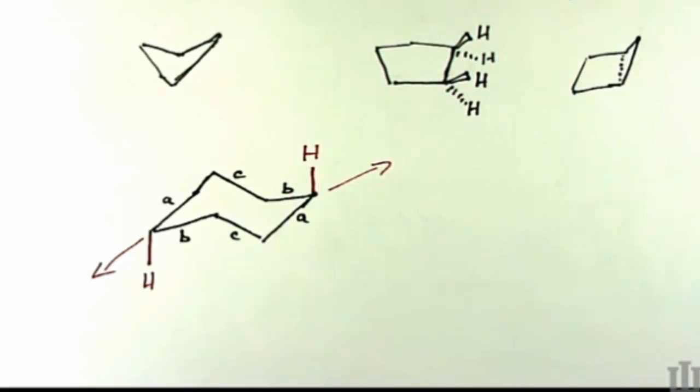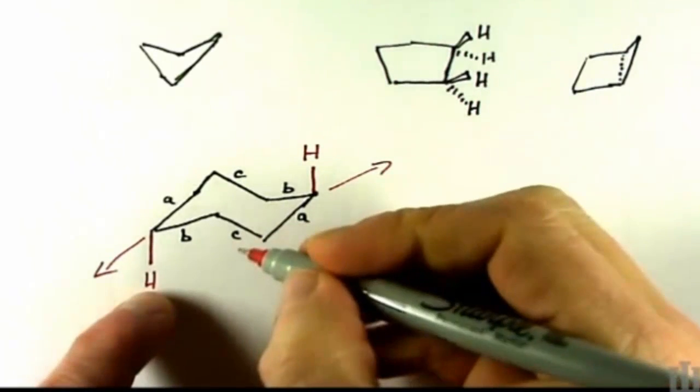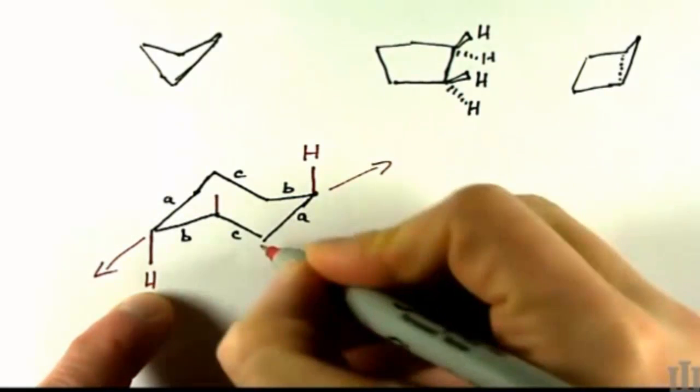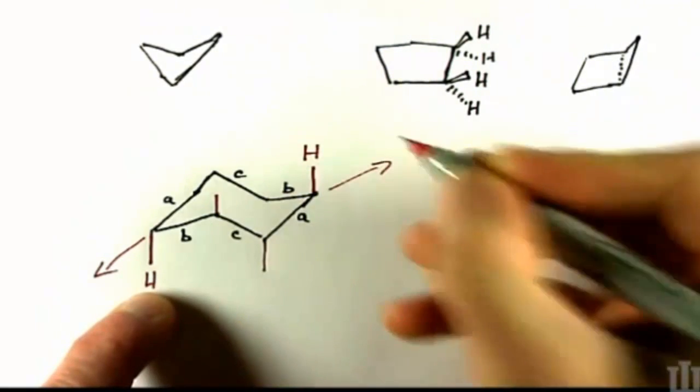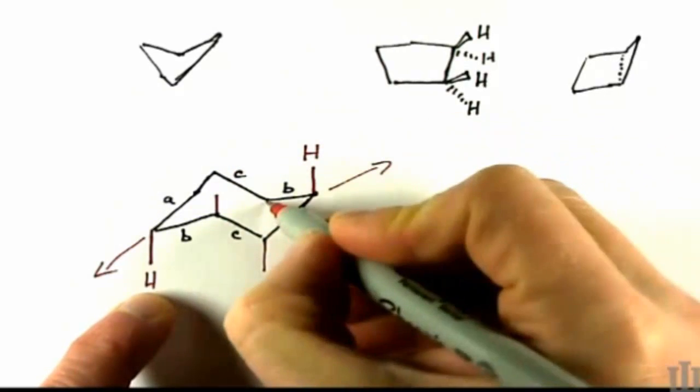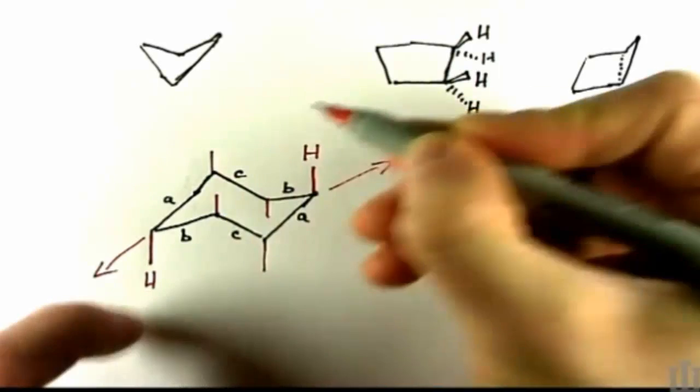Remember, things alternate as you go around. One carbon's got axial up, next one's axial down, and so on. So the first one I drew was axial down, the one beside it is axial up, next one is down. The previous one I put up is already there, next one's down, next one's up, and they're all drawn in.